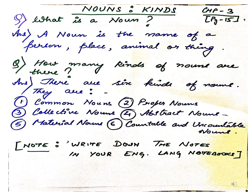In this slide, children, you can see nouns and the kinds which is given in page number 15, chapter 3. What is a noun? Noun is the name of a person, place, animal or thing. There are 6 kinds of nouns here as given in your book: common noun, proper noun, collective noun, abstract noun, material noun, and countable and uncountable nouns. Countable and uncountable come under one heading only.